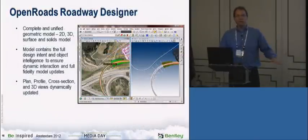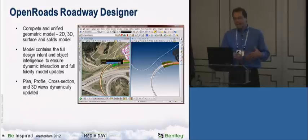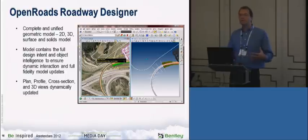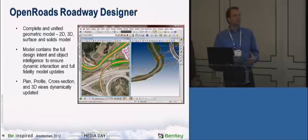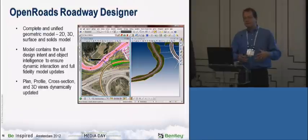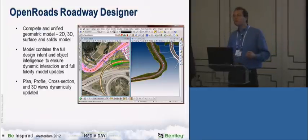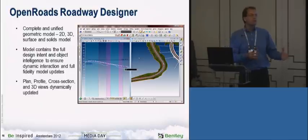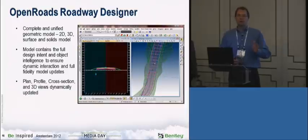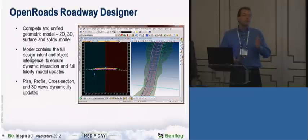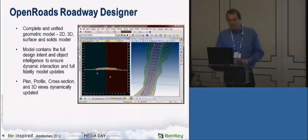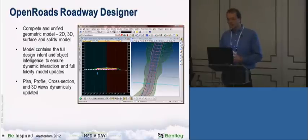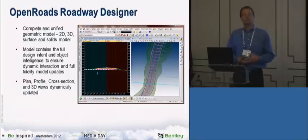Once the site is understood and underground utilities are mapped, we start designing new access roads to the hospital using OpenRoads Roadway Designer, which enables engineers to create a complete, unified geometric model combining 2D, 3D surface, and solid models into one information model. What we call 'design intent' means the software remembers why an engineer chose to design something a certain way — so when a change is made, it can update the model intelligently, maintaining the original intent. It also creates plan, profile, cross-section views, and 3D views.